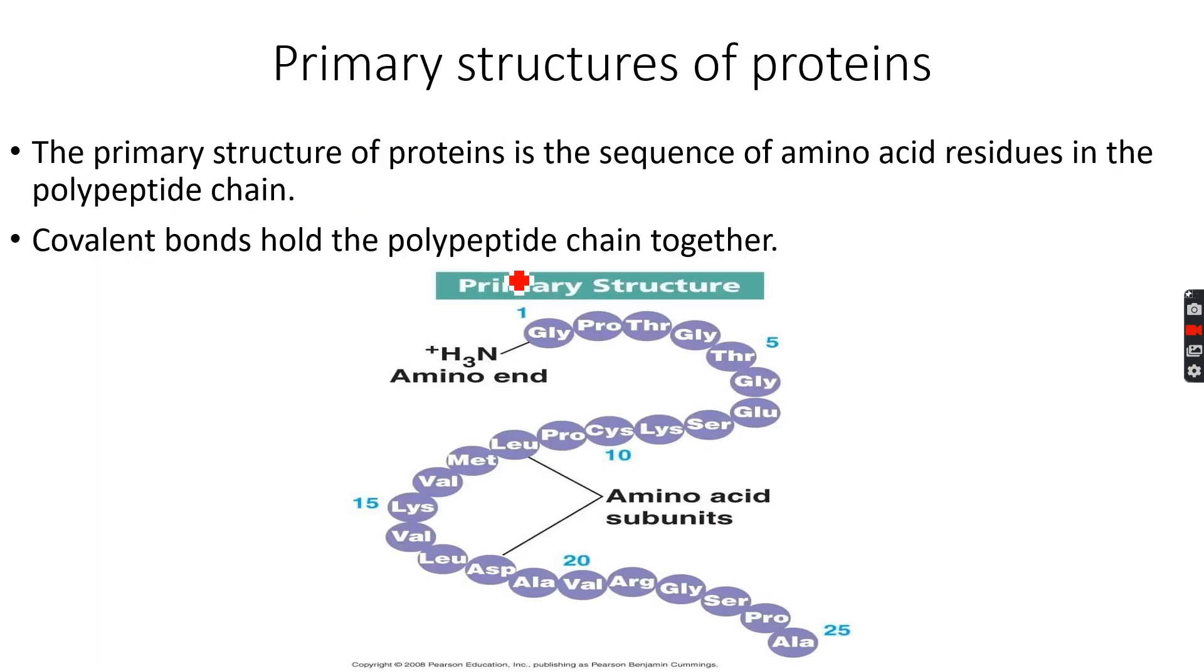Proteins have three different structures that we study. One is called the primary structure. The primary structure is basically the sequence of amino acid residues in the polypeptide chain.